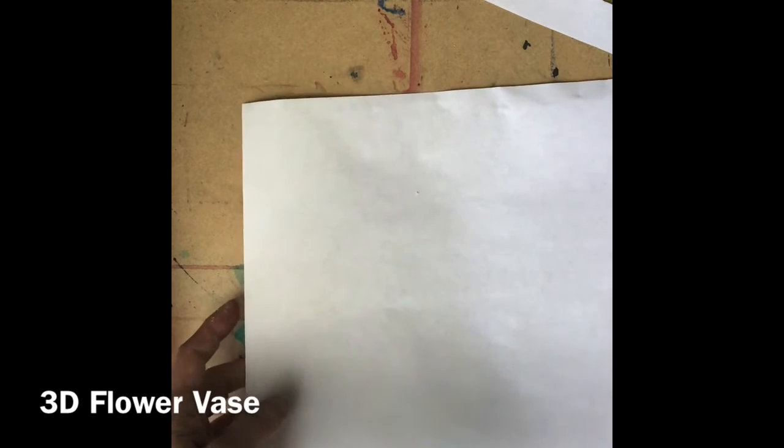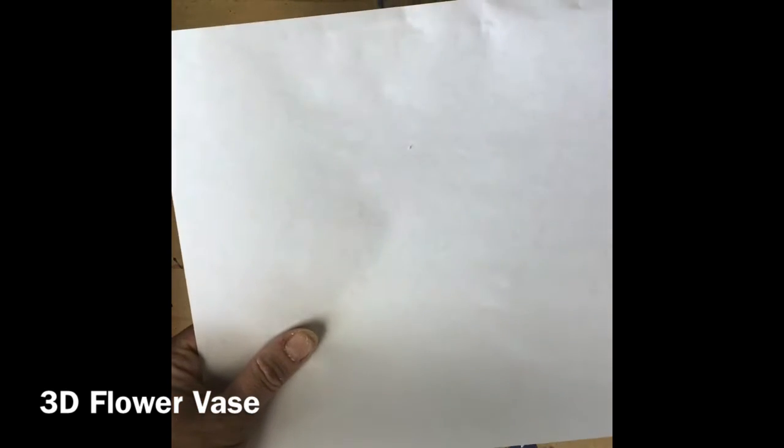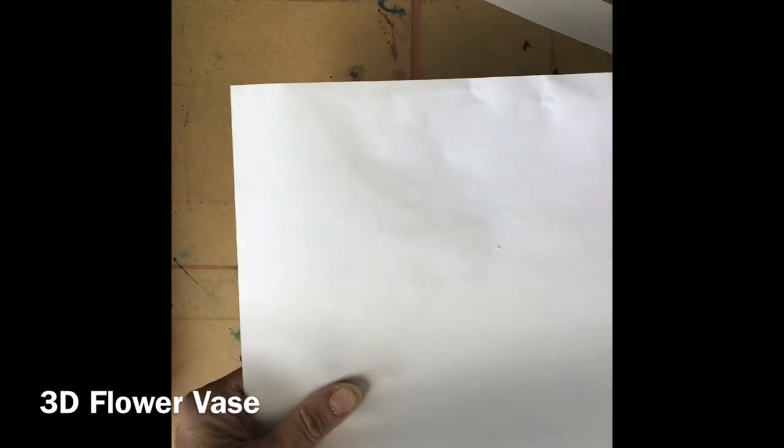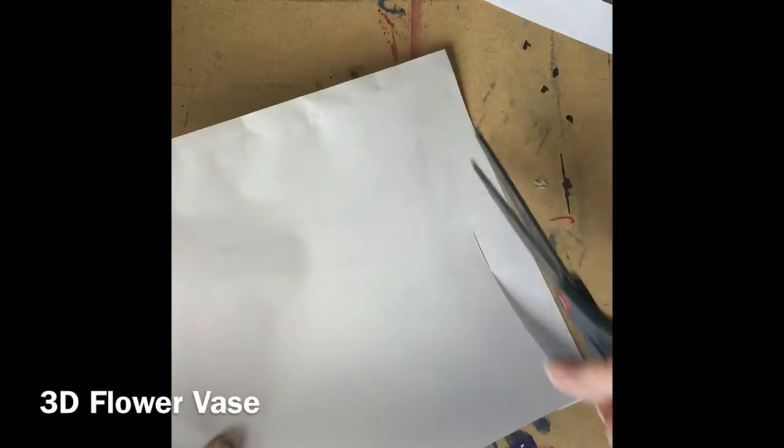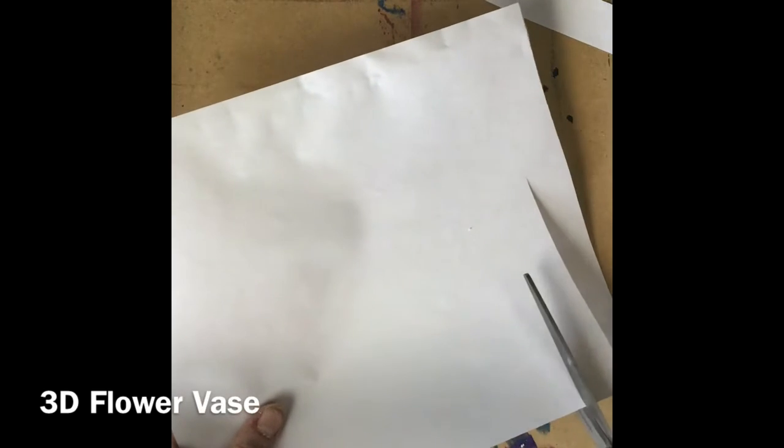And then on the rest of it I'm going to cut fringe again. I like to turn my paper so that it's going horizontally to do that. And I make those strips I'm cutting about an inch apart and I leave it so that it's about halfway down the paper.